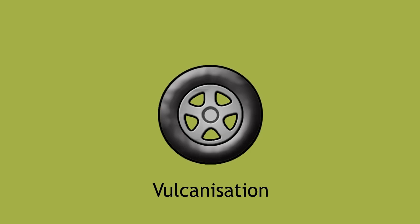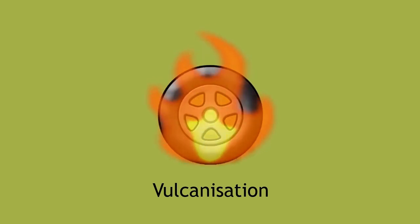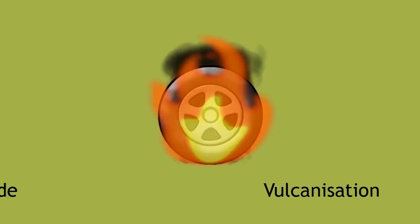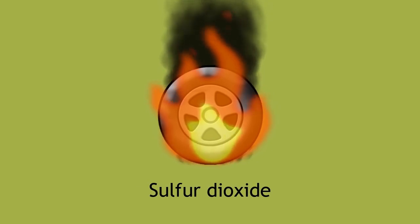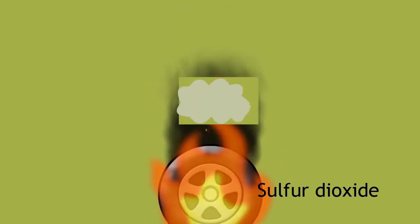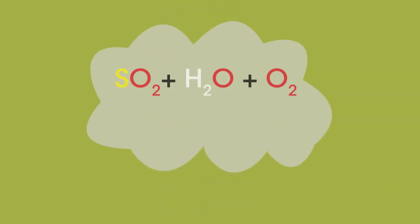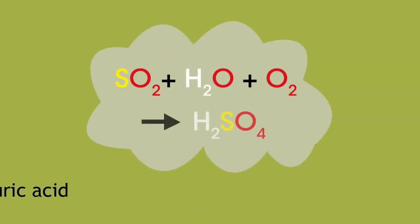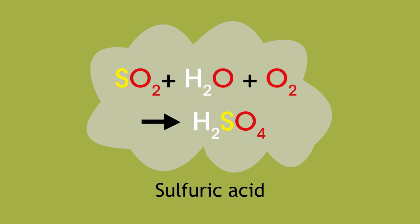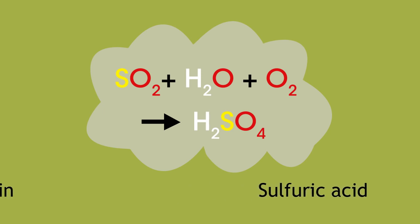Due to the presence of sulfur in these tires, burning rubber can actually form sulfur dioxide, which could then combine with rain to form sulfuric acid, contributing to acid rain.